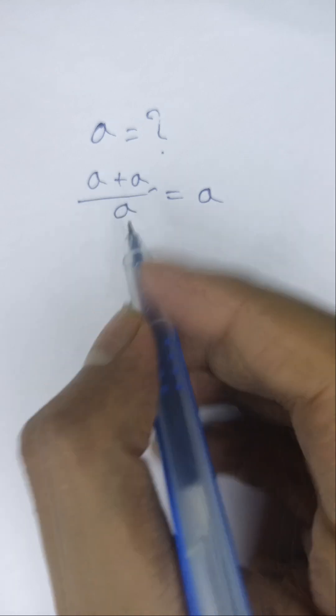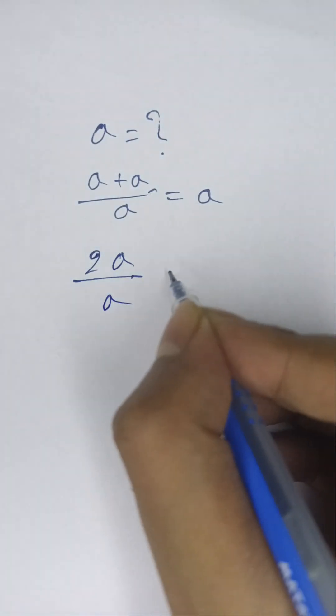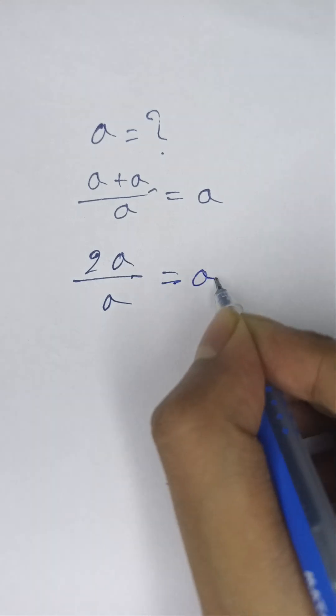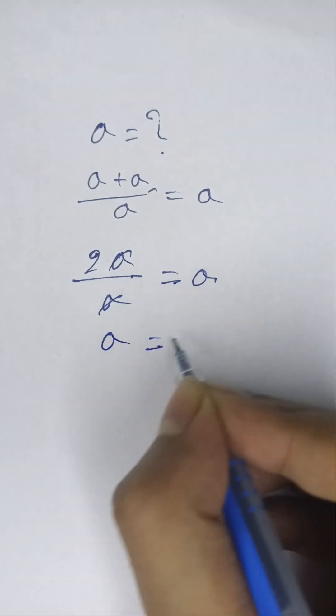First of all, a plus a will be 2a divided by a equals a. Then a is cancelled out, so a equals 2.